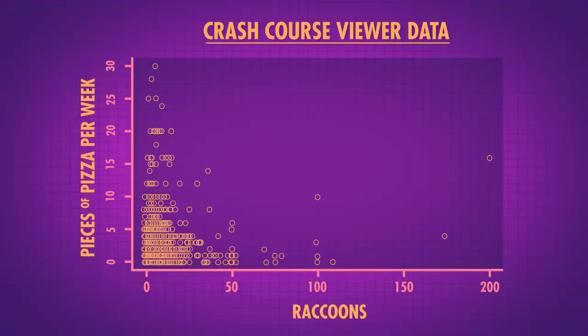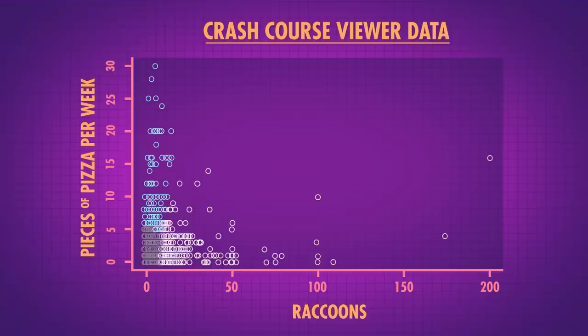If you were a scientist, you might want to look at the differences in health outcomes between the three pizza ordering groups, like whether the group that orders a lot of pizza has higher cholesterol. You may even want to look at data in five clusters instead of three, and k-means will help you do that. It will even allow you to create five clusters of Crash Course viewers based on how many raccoons they think they can fight off and the number of pieces of pizza they claim to eat in a week — and this is actual survey data from you all.